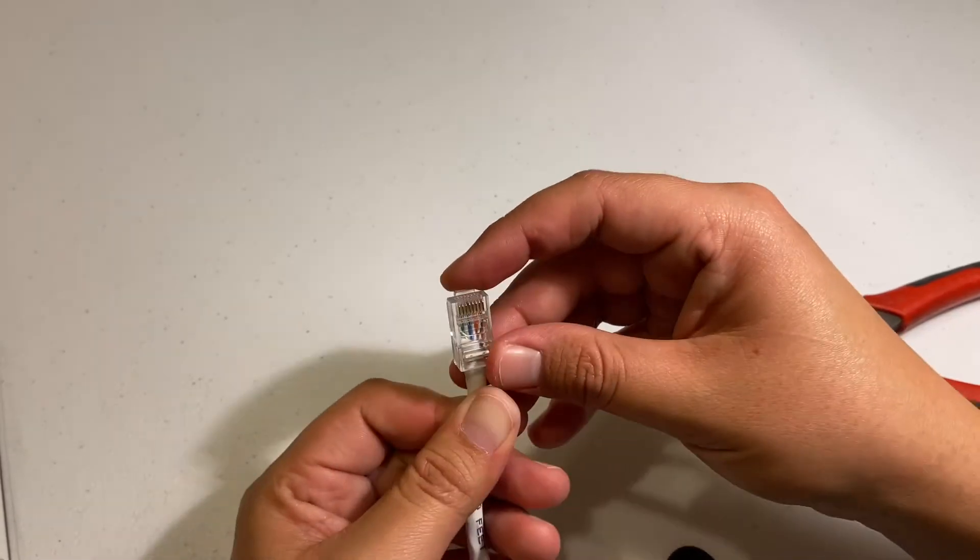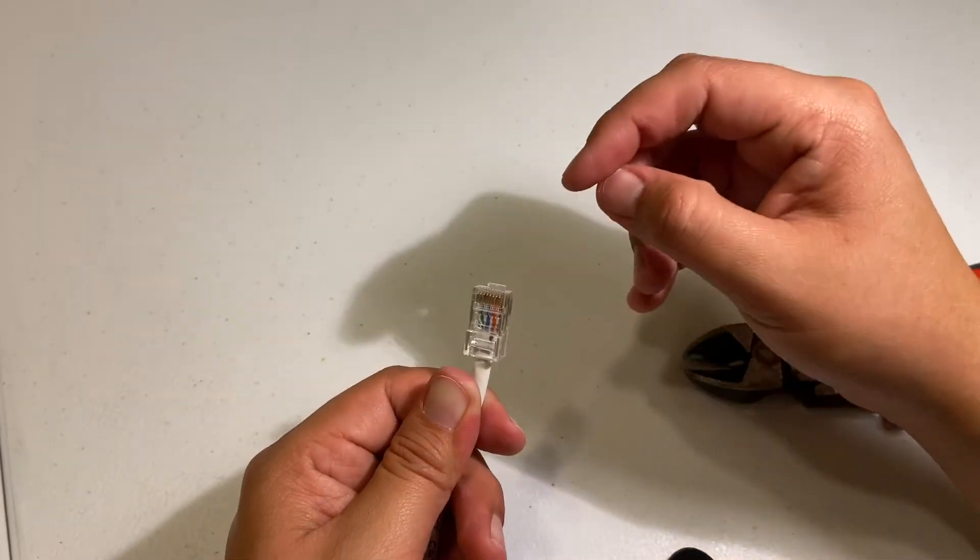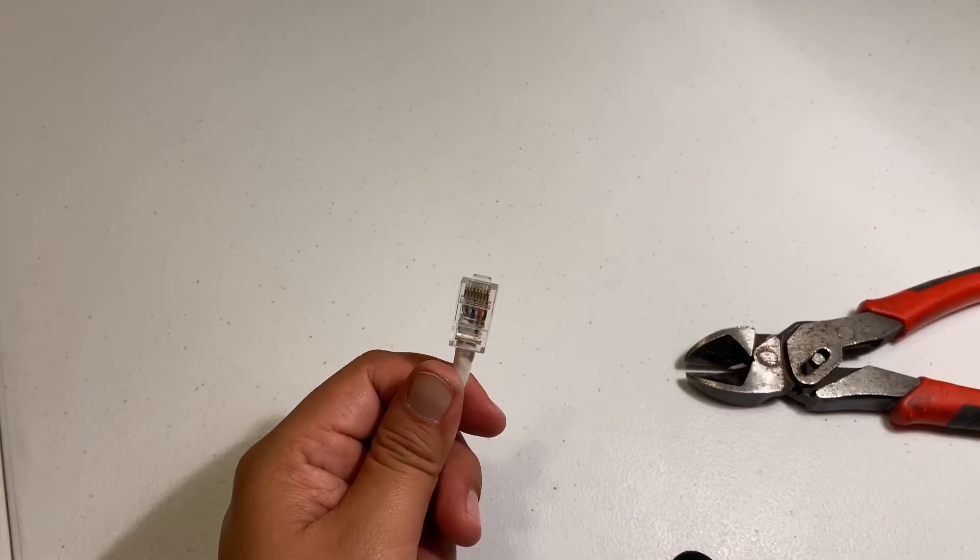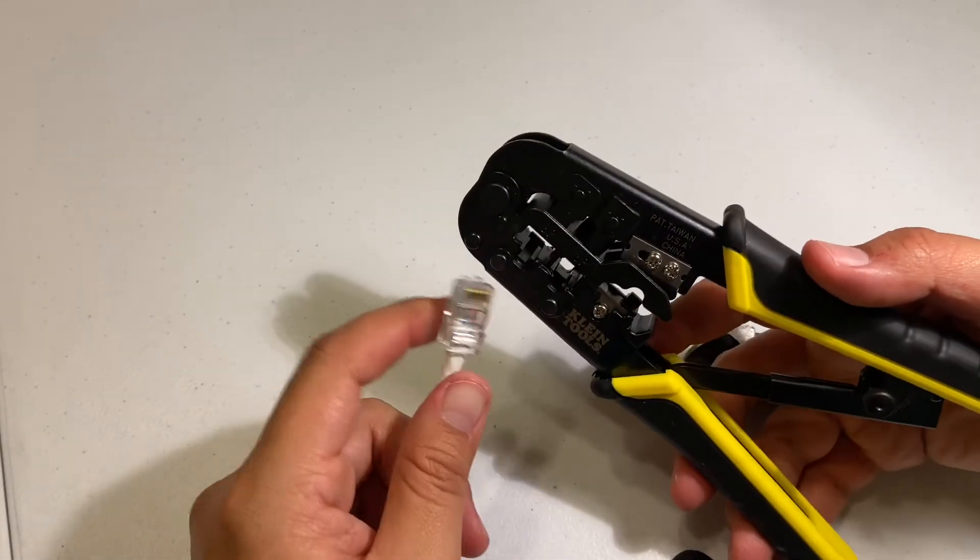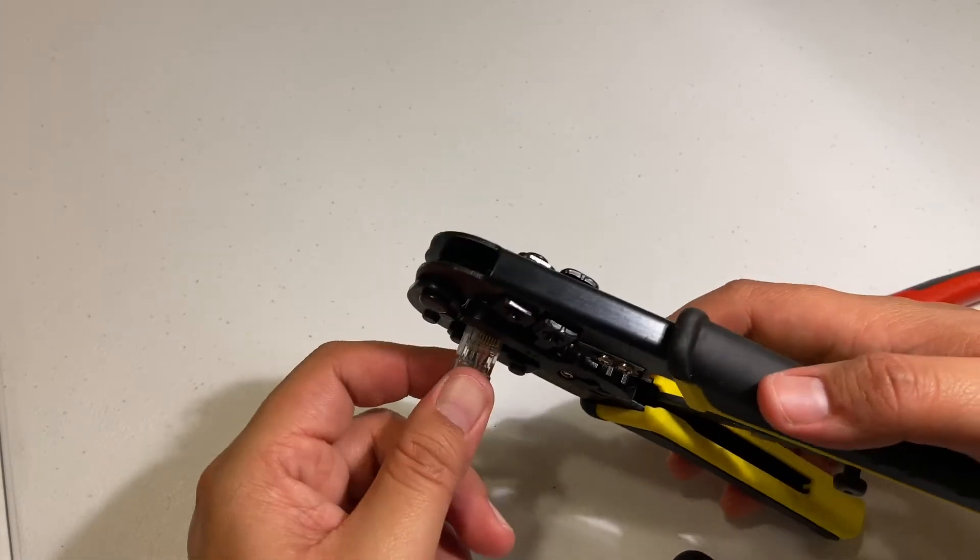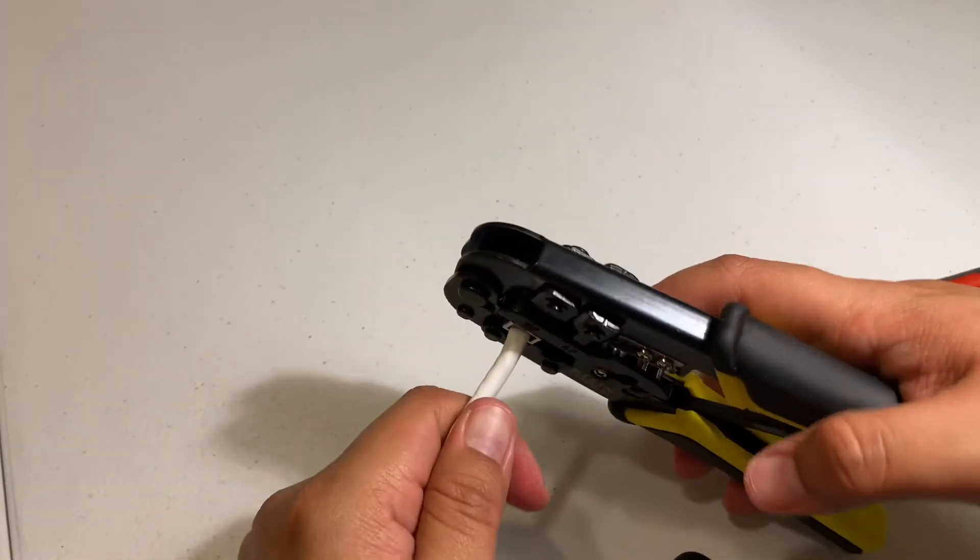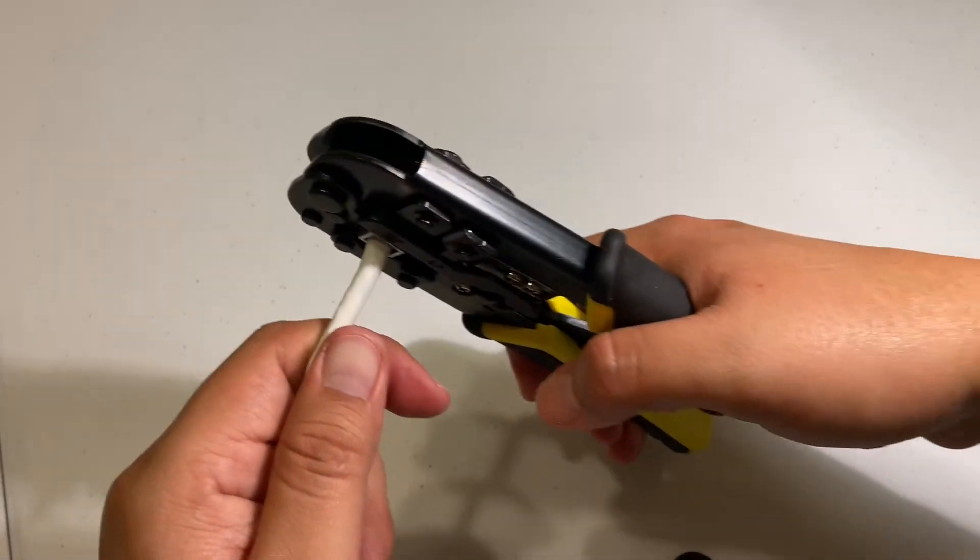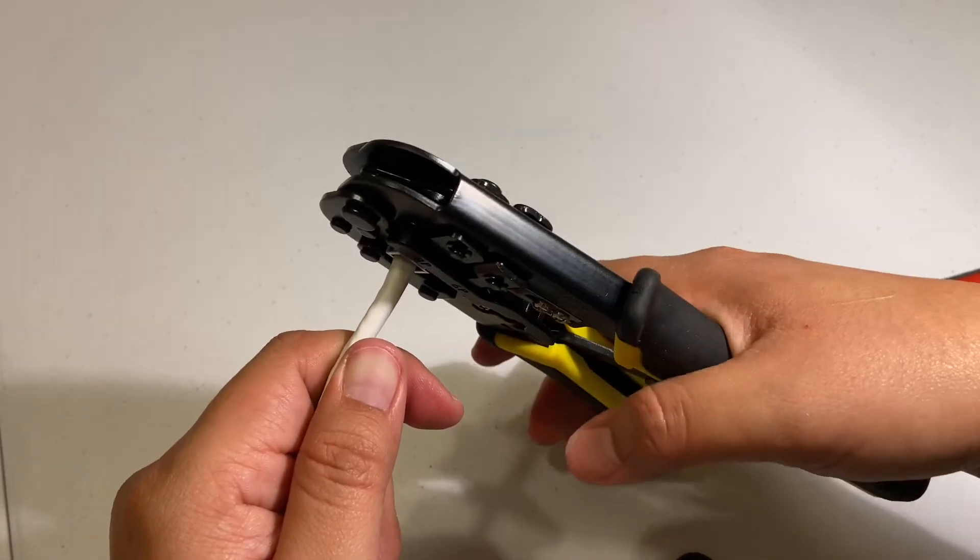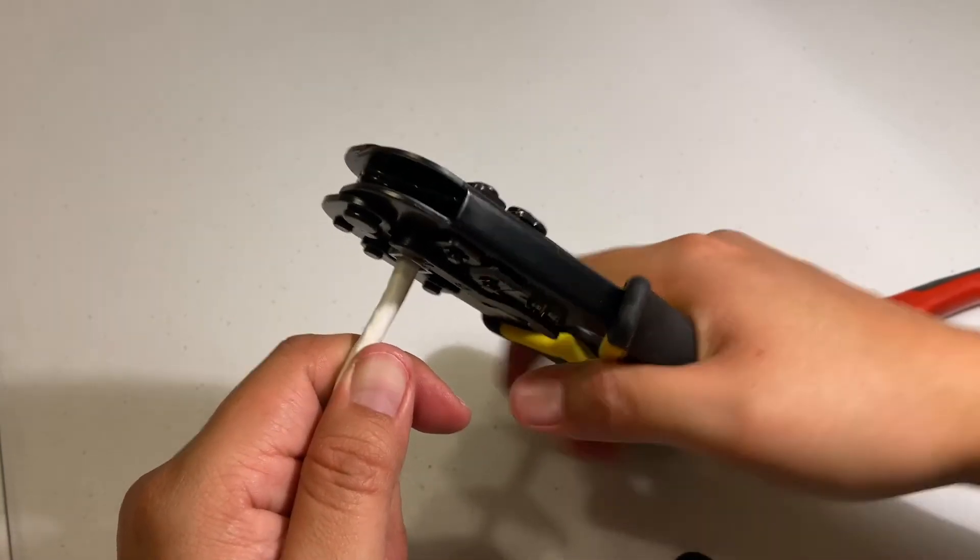Perfect. So now once it's in there we'll grab the crimpers, just put it in there, we're gonna crimp it once. I usually do it like at least two times just to make sure.